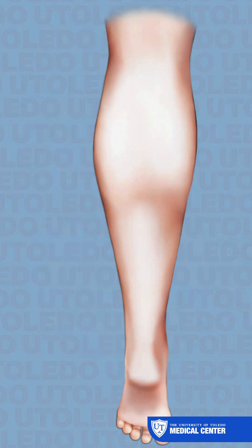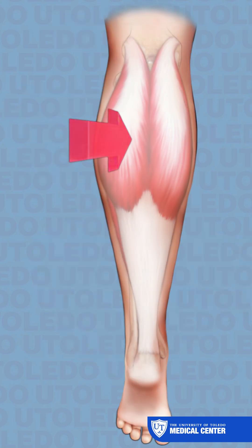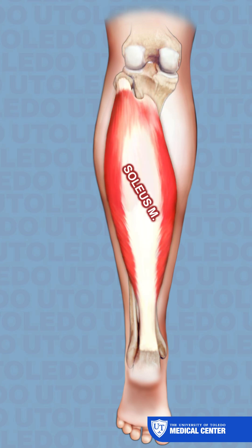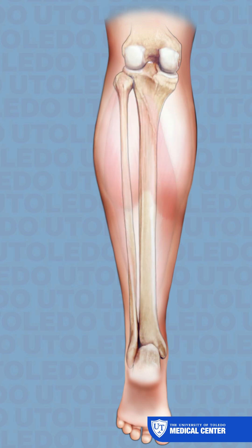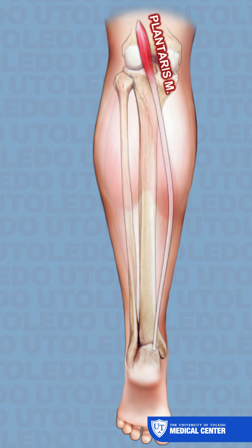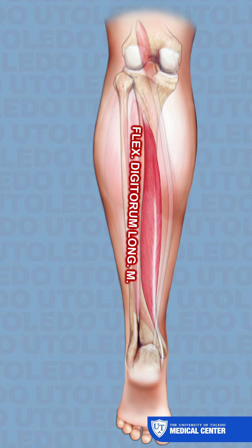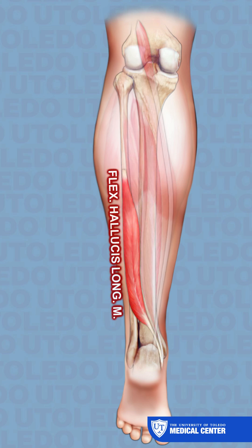The muscles of the back of the lower leg, or calf, include the superficial muscles of the gastrocnemius and soleus muscles. The deep muscles include the plantaris, the tibialis posterior, the flexor digitorum longus, and the flexor hallucis longus.